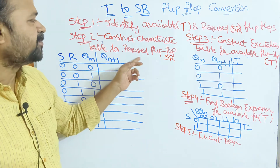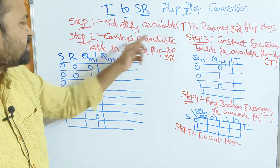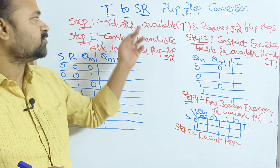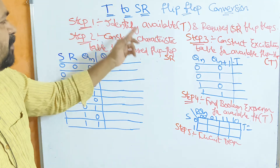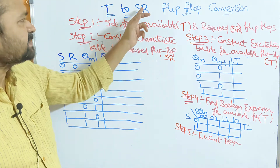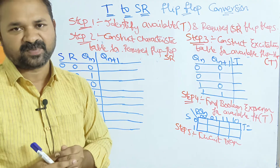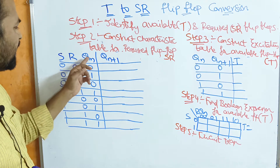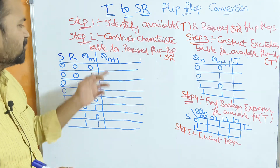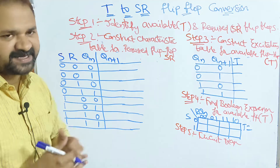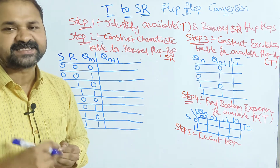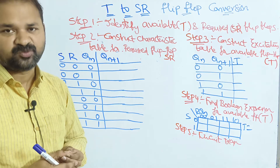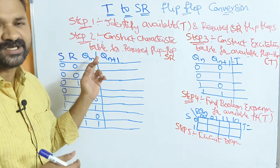Step 2 is based upon the required flip-flop. We have to construct the characteristic table for the required flip-flop. The required flip-flop is the output flip-flop, which is the SR flip-flop. The inputs are S, R, and Qn. The output is Qn+1, which represents the next state output. Qn means current state output, and this current state output is also an input. So here we have 3 inputs.